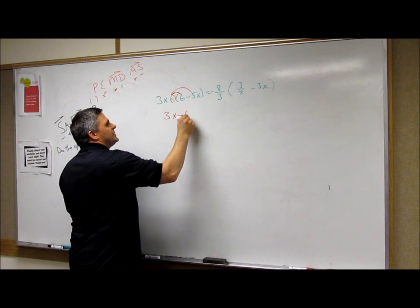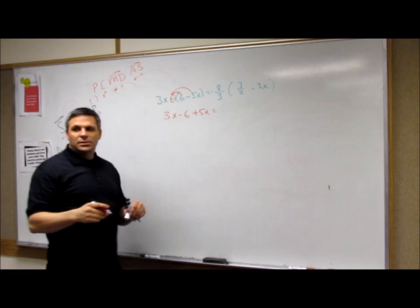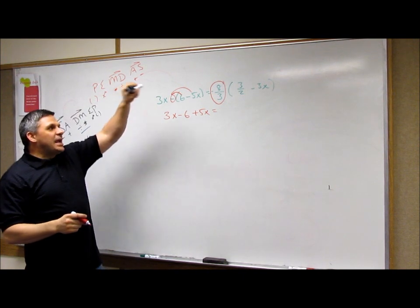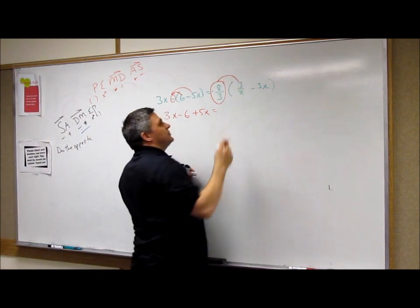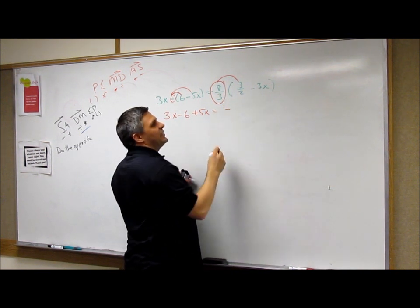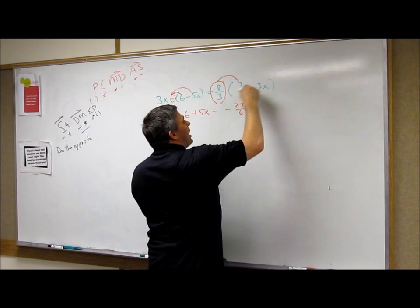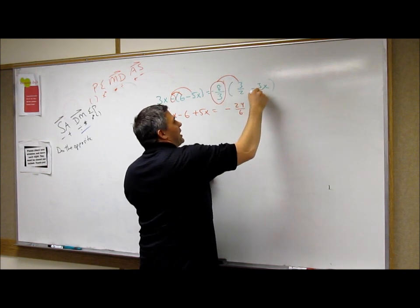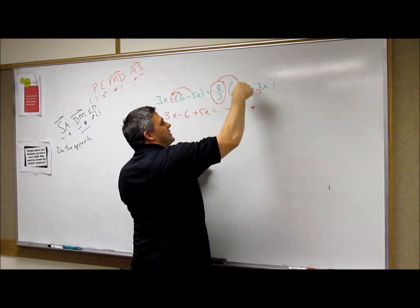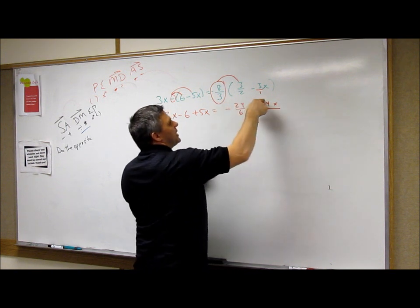So what happens is you got 3x minus 6 plus 5x equals, and now the other side. Deal with it. The whole paper. The minus 8 over 3. So now I've got minus 8 over 3 times a positive is a minus. 8 times 3 is 24, 2 times 3 is 6.